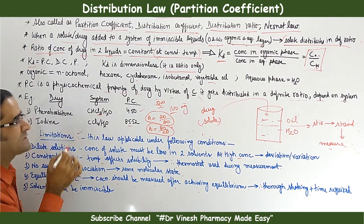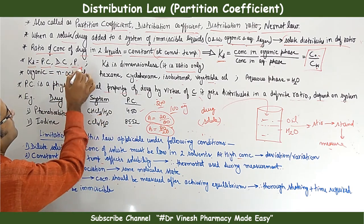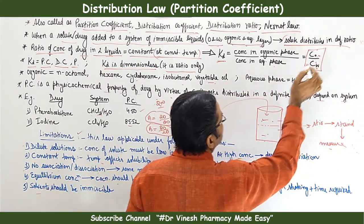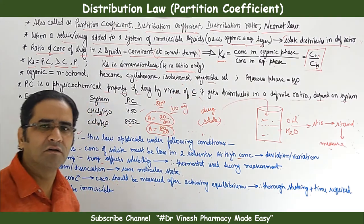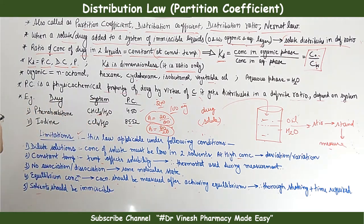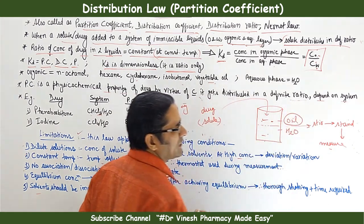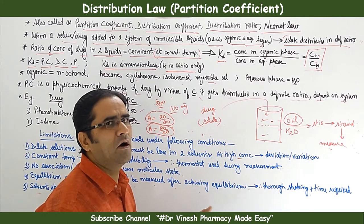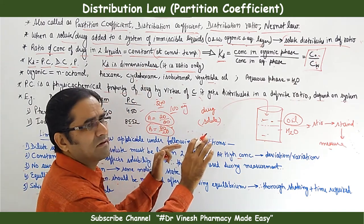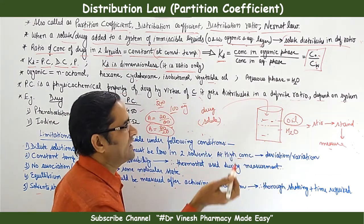The distribution coefficient KD is also represented as PC (partition coefficient), DC (distribution coefficient), or simply P. It is dimensionless because it is simply a ratio — no units like mg. Oil is generally replaced by organic solvents, so distribution coefficient measures the concentration of a drug between the oily (organic) phase and the aqueous phase.